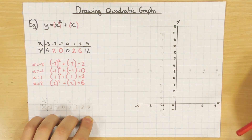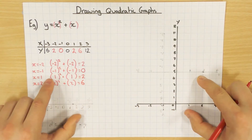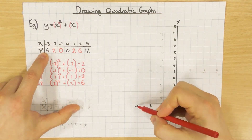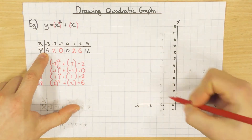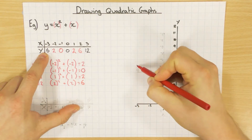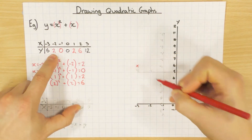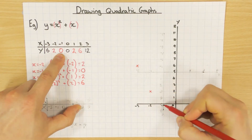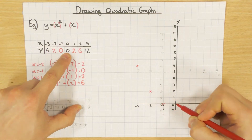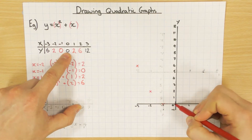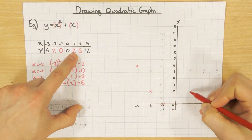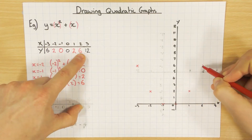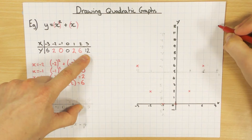All we're going to do now is plot this. So when x is minus 3, y is 6 — along the corridor to minus 3, up to 6. Minus 2 and then 2. Minus 1 and 0. 0, 0. 1, 2. 2, 6. And 3, 12.